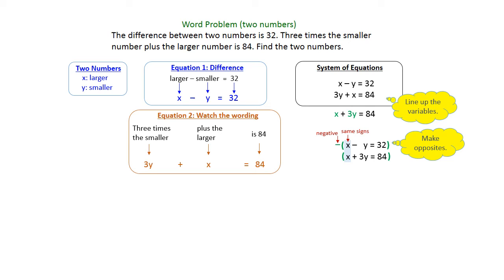As long as I distribute a negative along the top equation, I'll have the opposites that I want. So the first equation now becomes negative x plus y equals negative 32. That's distributing a negative 1. Second equation does not change.